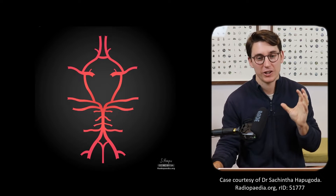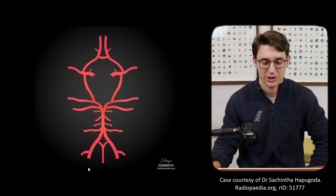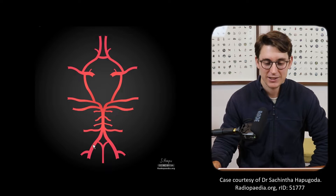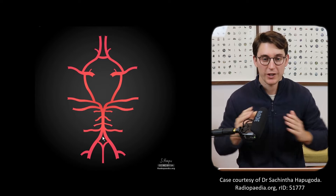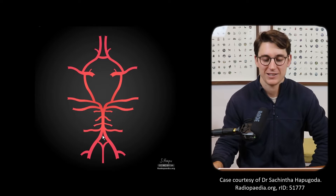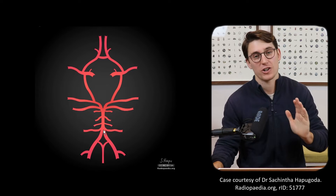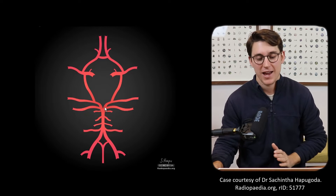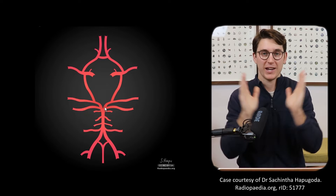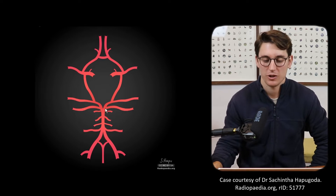Let's start by looking at the input to the posterior circulation - these two vertebral arteries come up from the neck and join to form the basilar artery. The basilar artery runs anterior to the pons up the clivus and then bifurcates into our posterior cerebral arteries.